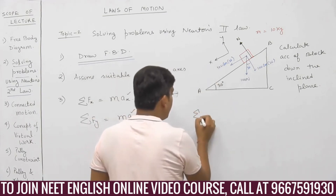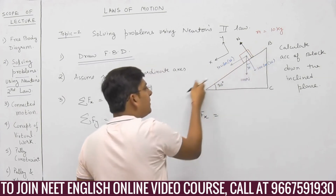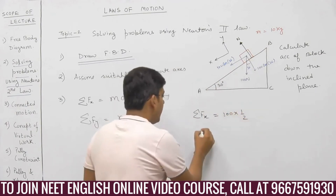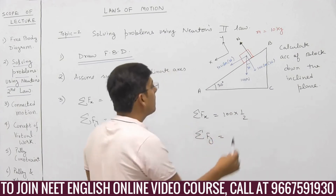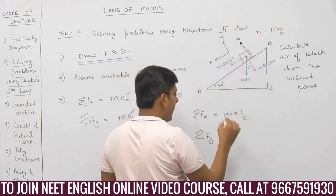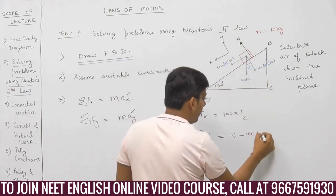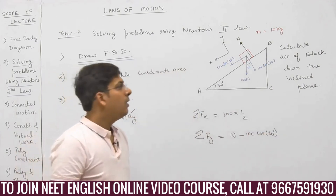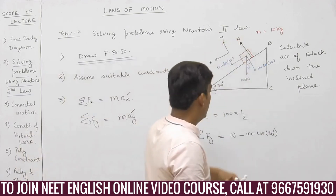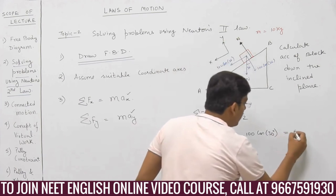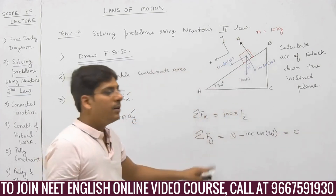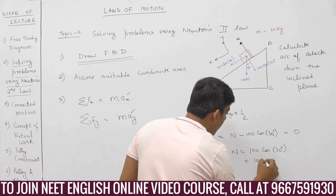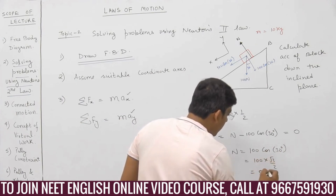Summation Fx: the net force acting along the x direction is 100·sin30. Friction is absent. 100·sin30 = 100 × (1/2) = 50. For the net force along the y direction: normal reaction N is positive, so N minus 100·cos30 = 0. Since there is no motion along the y direction, the net force is zero, so normal reaction N equals 100·cos30 = 100 × (√3/2) = 50√3 Newton.